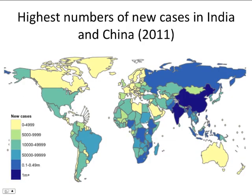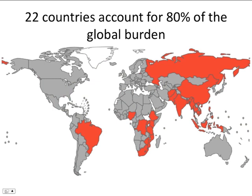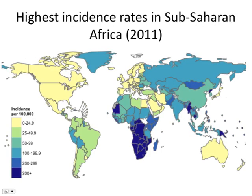I will now show some world maps of the current TB situation. The largest numbers of new TB cases are in India and China. Twenty-two countries shown in red on this map account for about 80% of the total number of new TB cases in the world. Most of those 22 countries are in Asia and in Africa. However, the countries with the highest incidence rates — the highest risk of TB per capita — are for the most part in sub-Saharan Africa, in countries most affected by the HIV pandemic. Higher rates of TB incidence are also observed in several countries of Asia and in a few Pacific island nations.